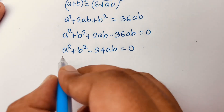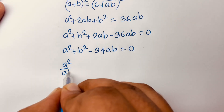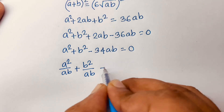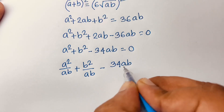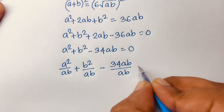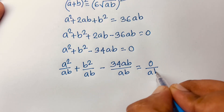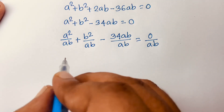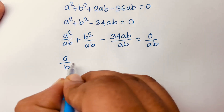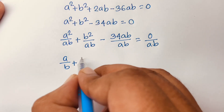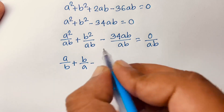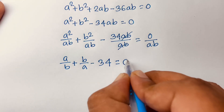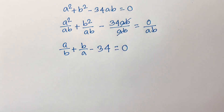Then I divide both sides by ab. So I get a squared over ab minus 34ab over ab plus b squared over ab equals 0. Simplifying: a over b plus b over a minus 34 equals 0.